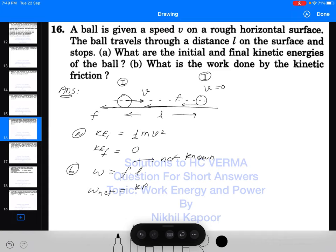Net work done is nothing but change in kinetic energy: kinetic energy final minus kinetic energy initial. I can say the net work done, which is work done by friction only, will be equal to final kinetic energy minus initial kinetic energy. So it is minus half m v square.